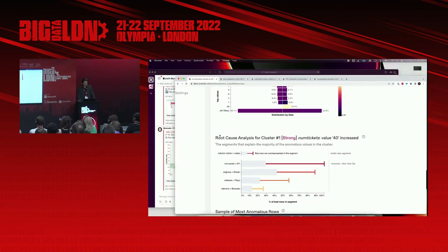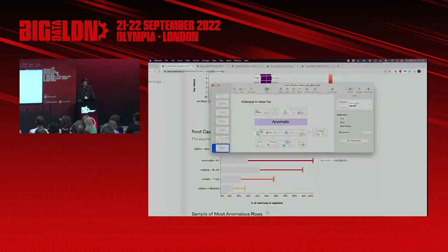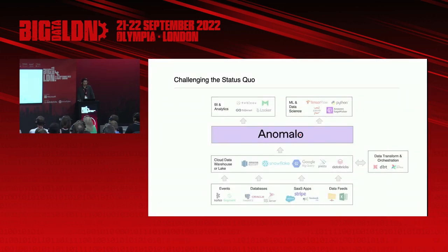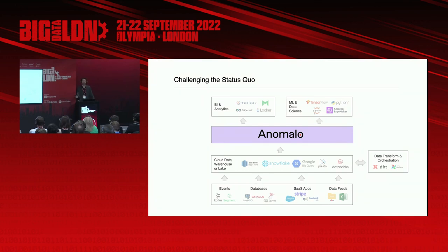To summarize what we went through: the paradigm we've been under in the data monitoring space is one where we have to generate rules. Although many tools have come out over the past 20 years giving us new ways to do that — new UIs, new types of checks — they're still founded in rules, which takes a lot of time and might not be scalable for my enterprise. We want to challenge that by leaning on unsupervised machine learning to automatically detect those issues. Thank you very much — I really appreciate your time.